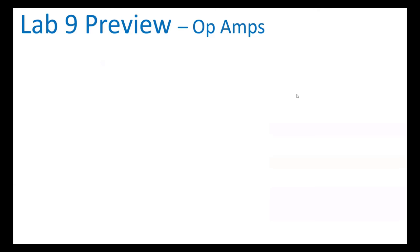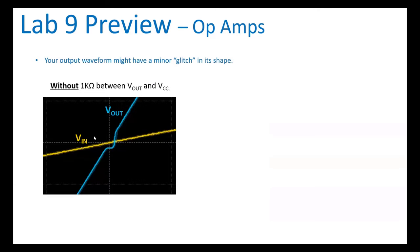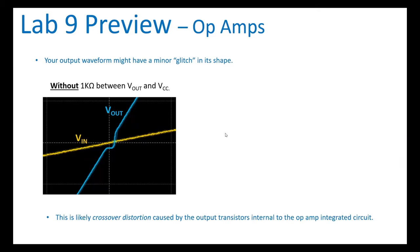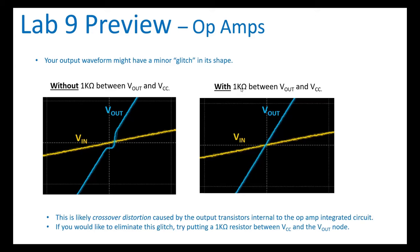One more thing — your output waveform might have a glitch. When I zoomed into my input and output waveforms, I saw this glitch. It's caused by the output stage of the op-amp, which has a push-pull configuration with two transistors — one going to Vcc, one to Vee. You get this glitch when the output transitions from one transistor to the other. If you apply a 1k ohm resistor between Vout and Vcc, that glitch will go away.